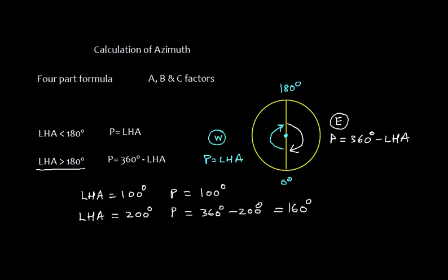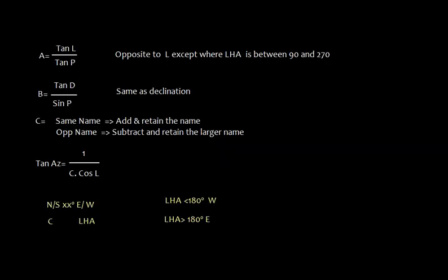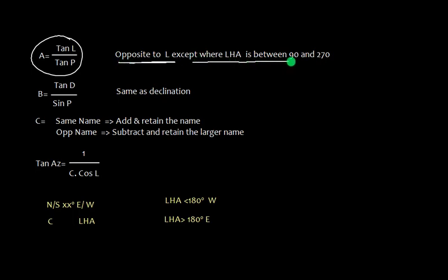We shall talk about factor A. A is equal to tan latitude upon tan P. The naming of A is opposite to latitude, except where LHA is between 90 and 270.